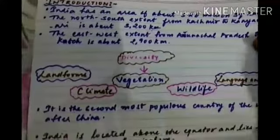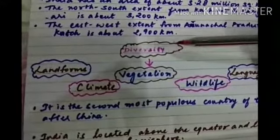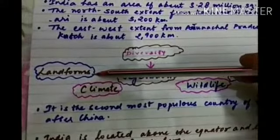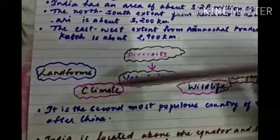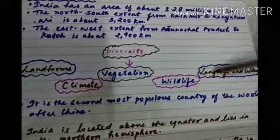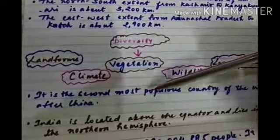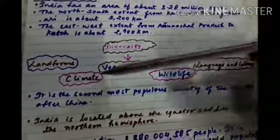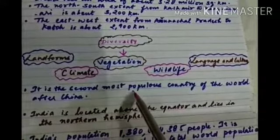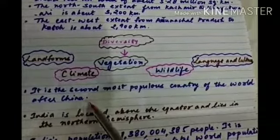Next is diversity. India is a land of diversity — different landforms, different climates, different types of vegetation, different types of wildlife, and language and culture are also different. It is the second most populous country of the world after China, as the population is increasing day by day.